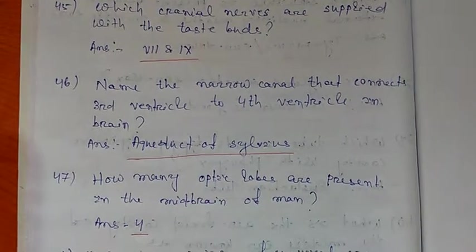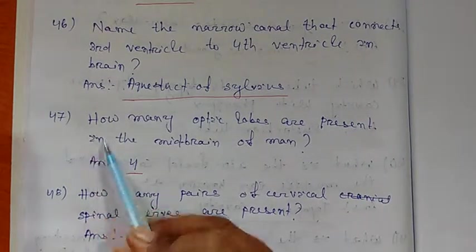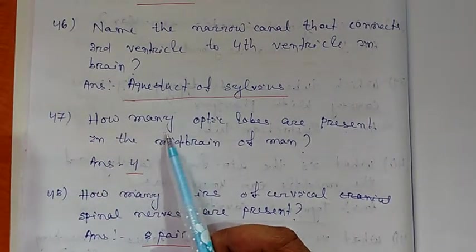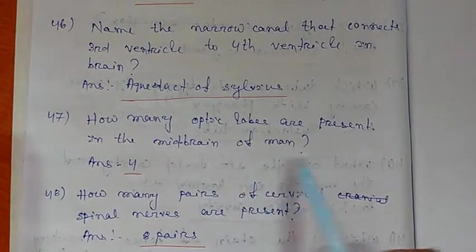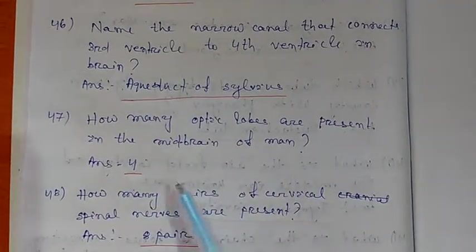Next, question number 47: How many optic lobes are present in the midbrain of man? Answer: 4.